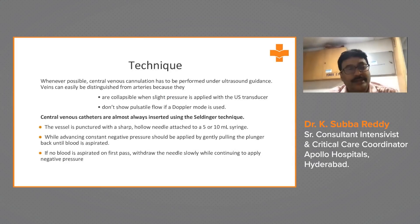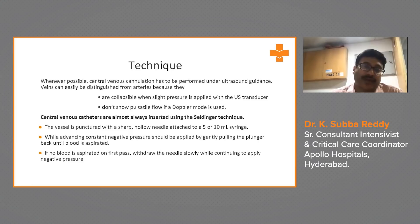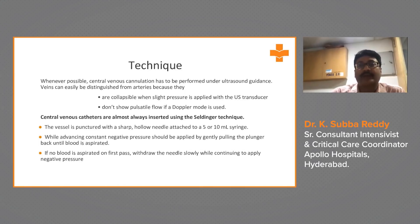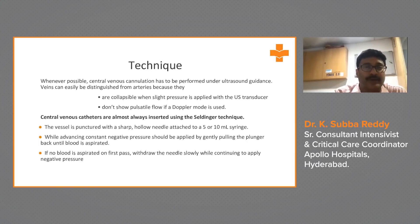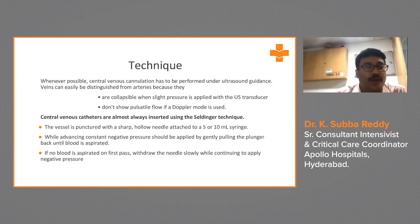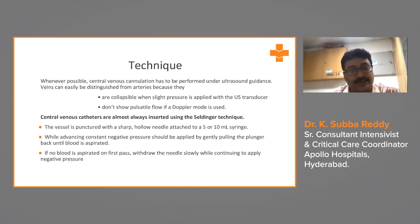Whenever possible, central venous cannulation should be performed under ultrasound guidance. Veins are easily distinguished from arteries because they are collapsible when slight pressure is applied with the ultrasound transducer and show no pulsatile flow in Doppler mode. Central venous catheters are almost always inserted using the Seldinger technique. The vessel is punctured with a sharp hollow needle attached to a 5–10 mL syringe; constant negative pressure should be applied by gently pulling the plunger back until blood is aspirated. If no blood is aspirated on first pass, withdraw the needle slowly while continuing negative pressure.